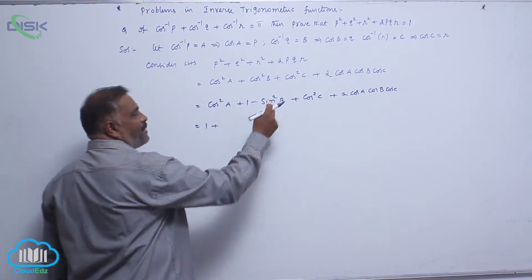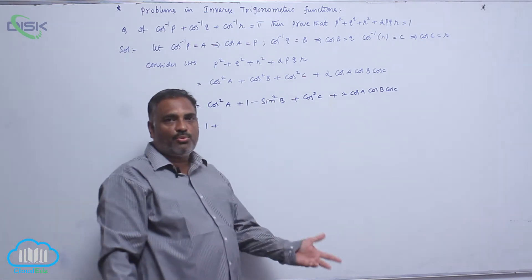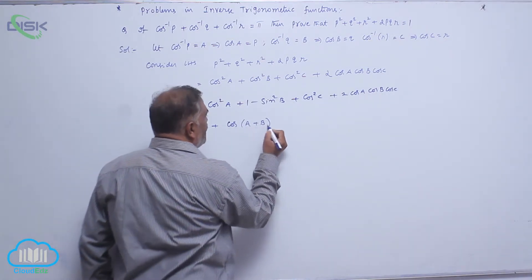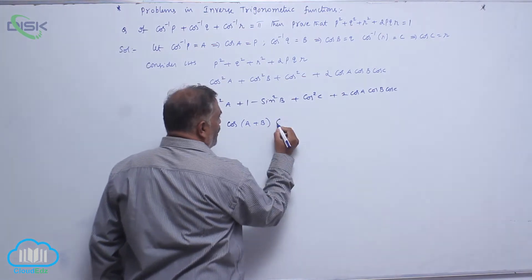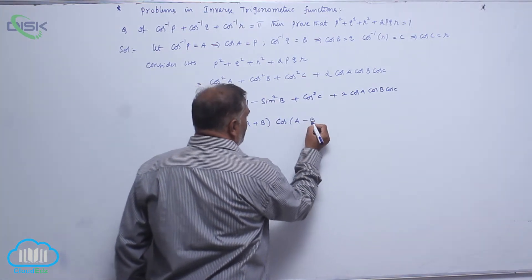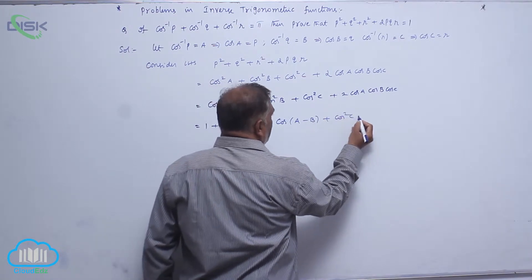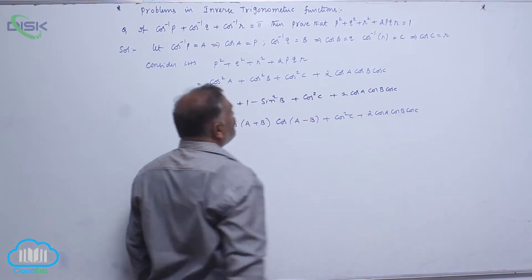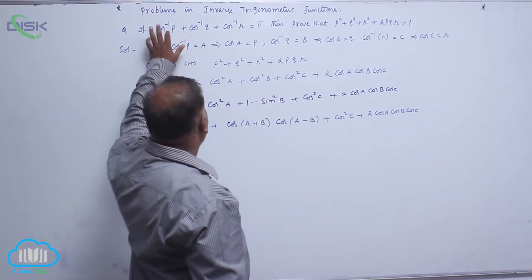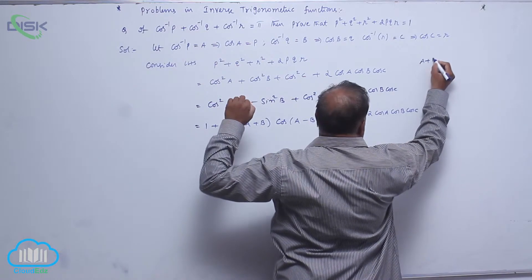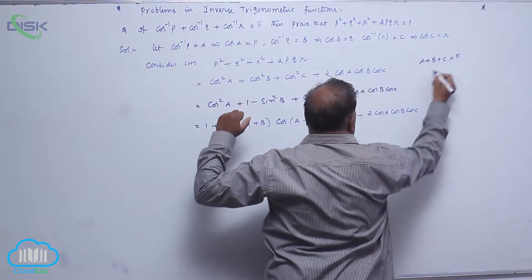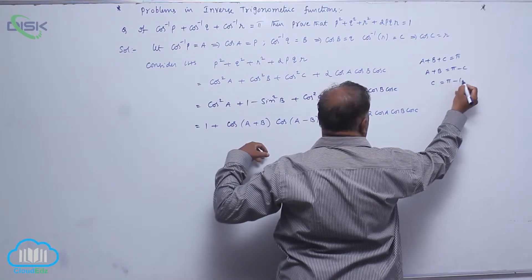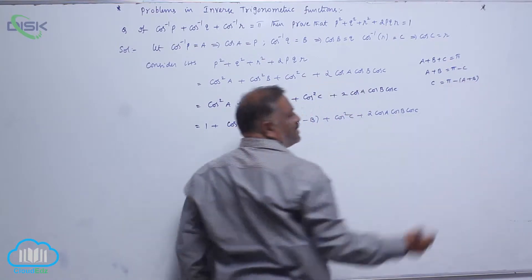Bring 1 to the front: 1 plus cos squared A minus sin squared B plus cos squared C plus 2 cos A cos B cos C. Since A plus B plus C equals pi, we have A plus B equals pi minus C, or equivalently C equals pi minus (A plus B).